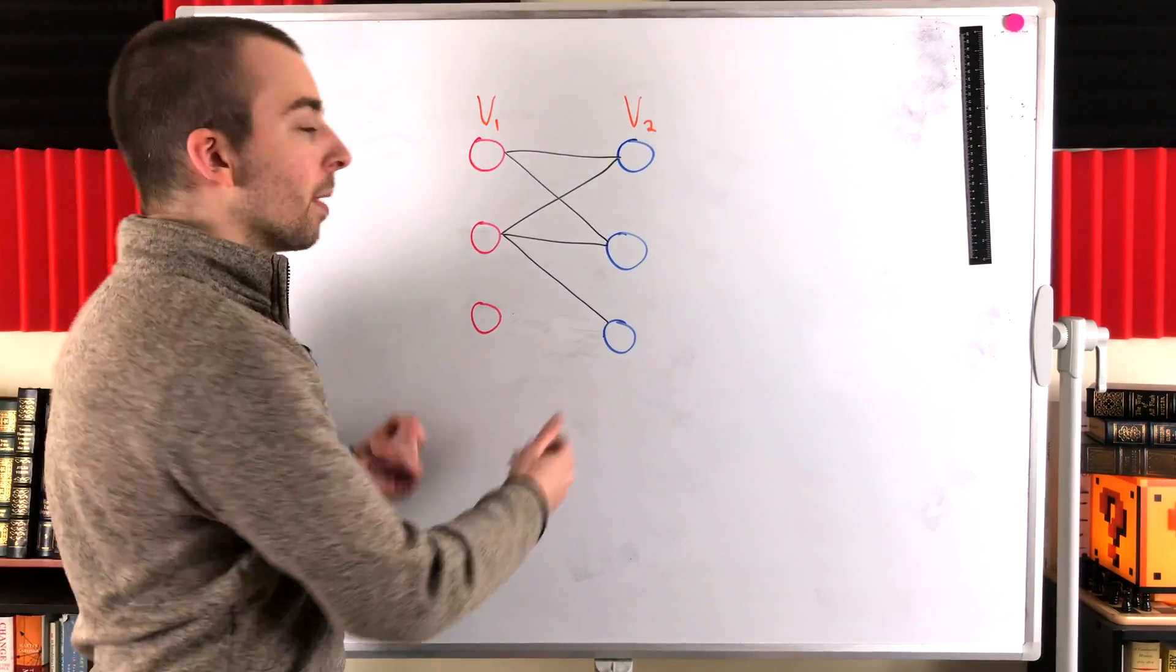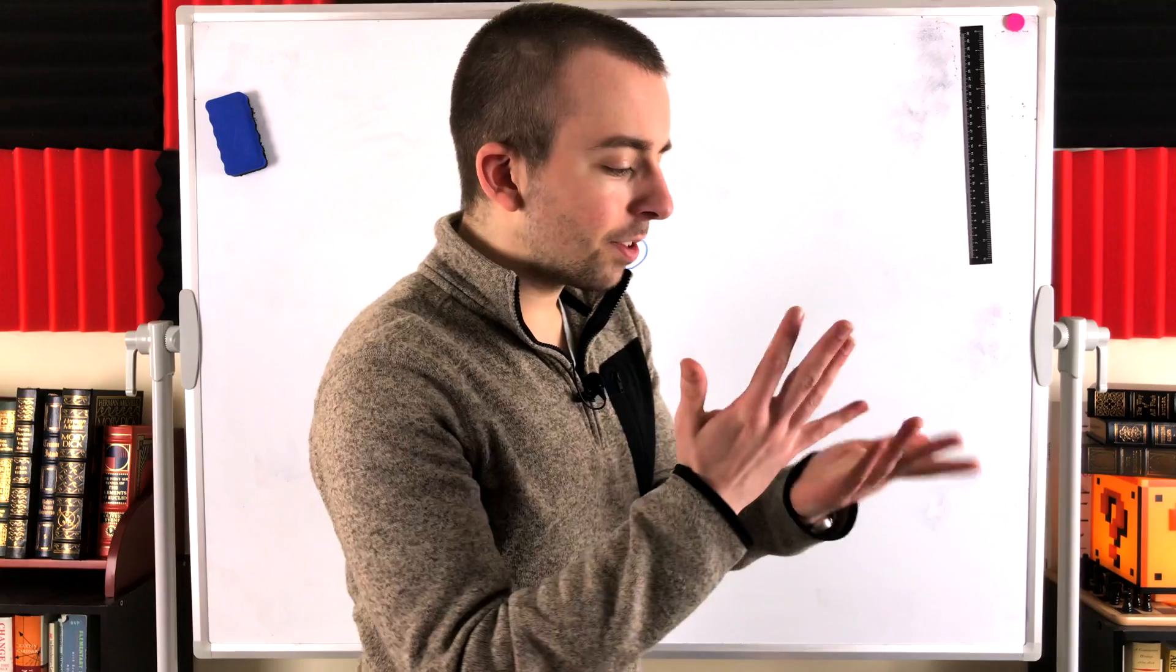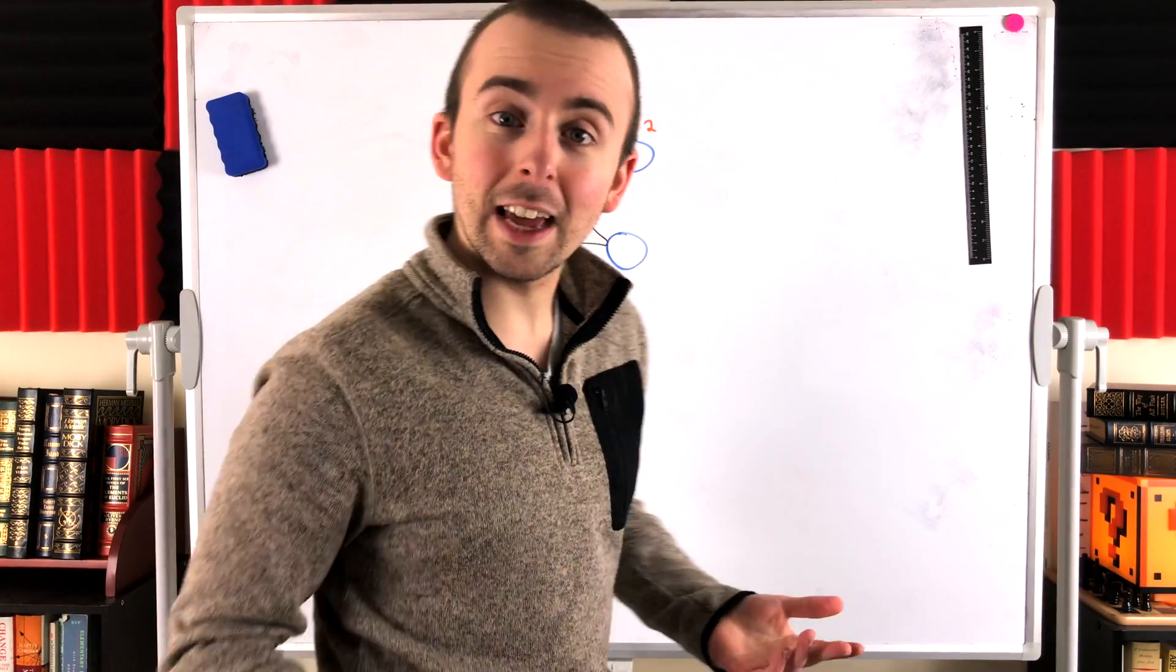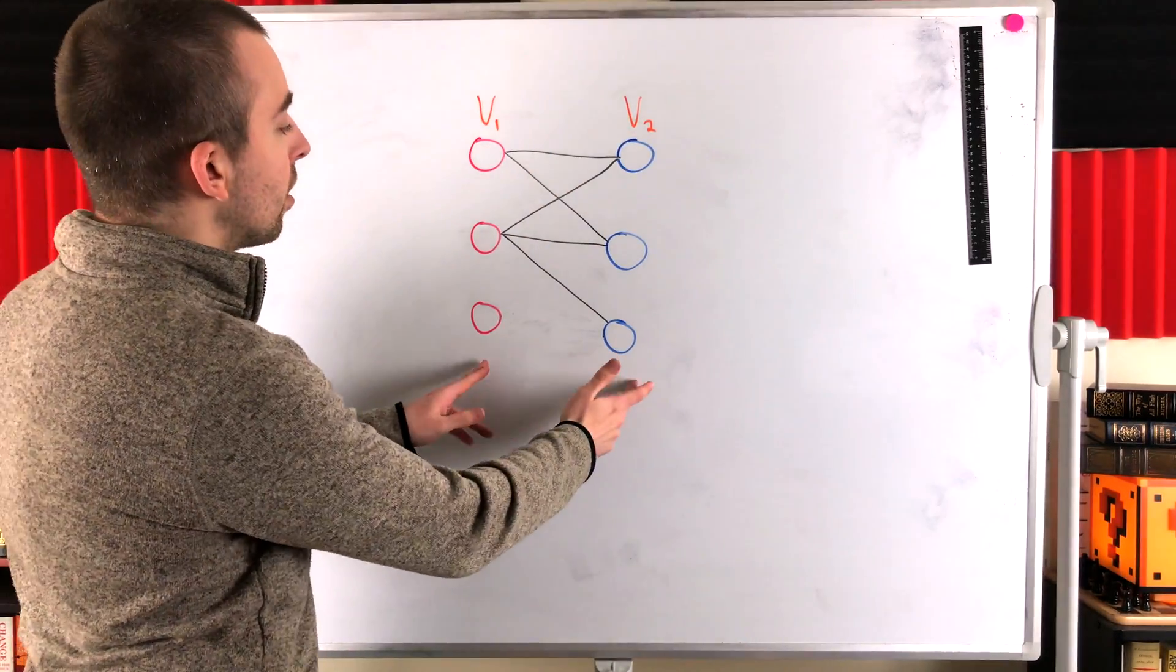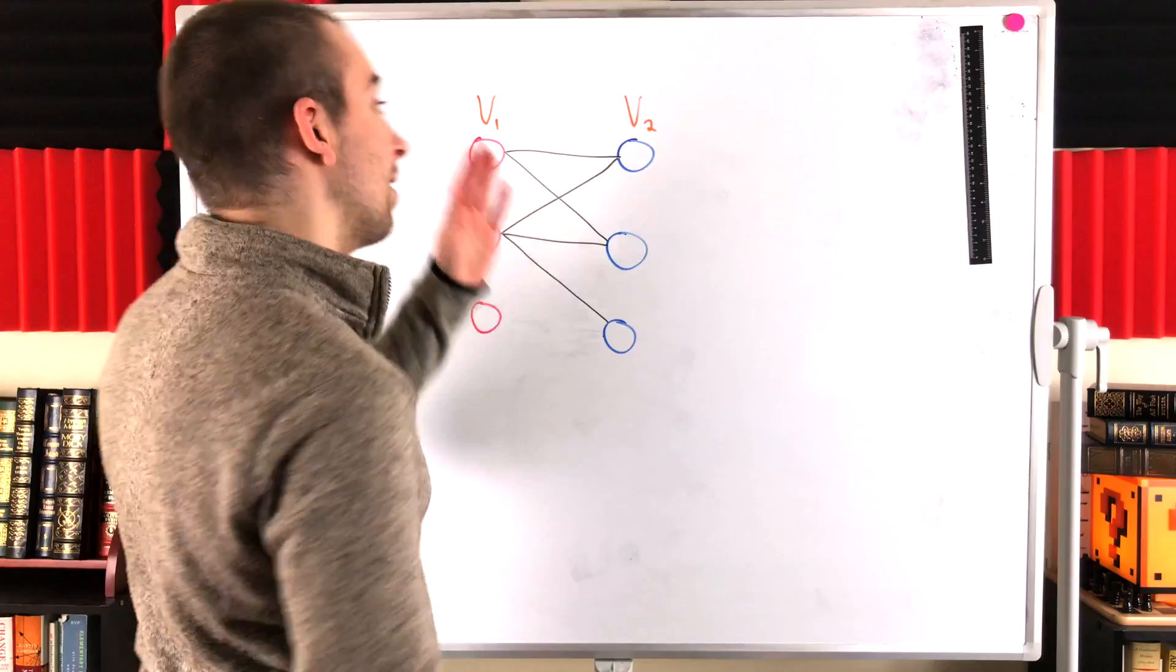is this a bipartite graph? And the answer is yes. It still fits the definition, right? We can partition the vertices into two partite sets, V1 and V2,